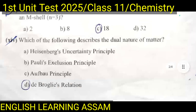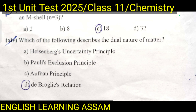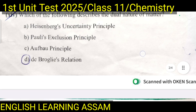Question number fourteen: Which of the following describes the dual nature of matter? A. Heisenberg's uncertainty principle, B. Pauli's exclusion principle, C. Aufbau principle, D. de Broglie's relation. The correct answer is D — de Broglie's relation.